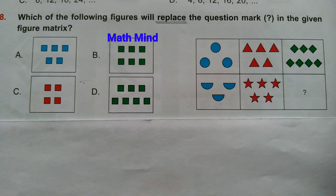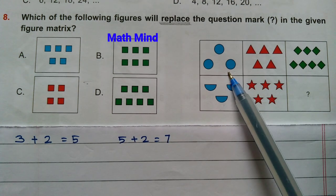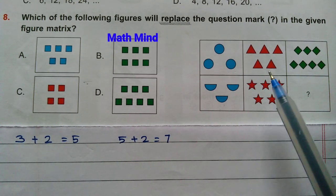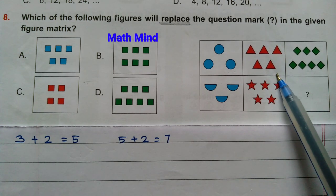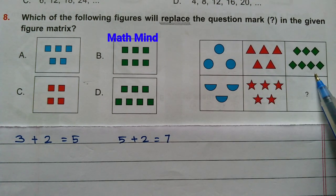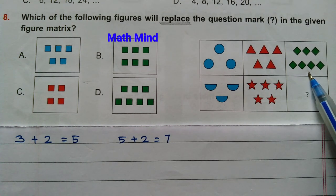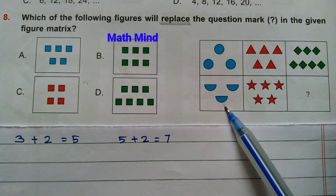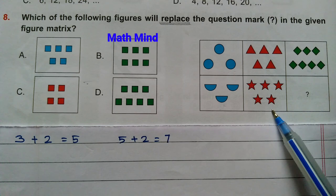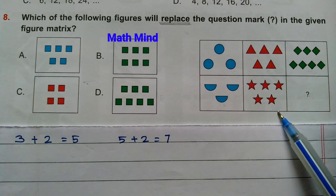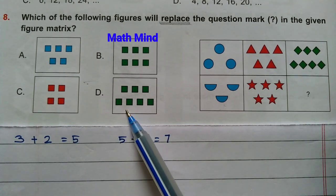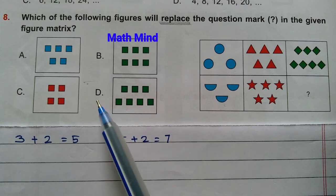Question number 8: Which figure will replace the question mark in the given figure matrix? Here there are 3 circles; 3 plus 2 equals 5 triangles. Similarly, 5 plus 2 equals 7 diamonds. Following the same pattern, here are 3 half circles; 3 plus 2 equals 5 stars. So we need 5 plus 2 equals 7 figures here. In option D, there are 7 squares. So option D is correct.